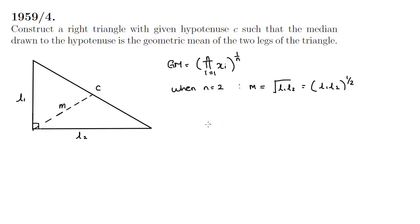So we have a relationship here between m and l1 and l2 and this is the constraint on our construction and we want to use it to construct our triangle.